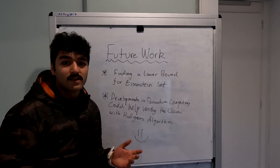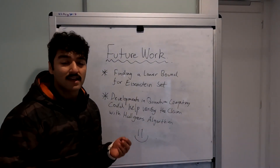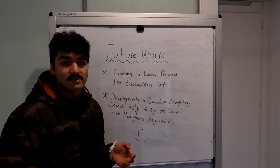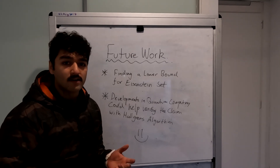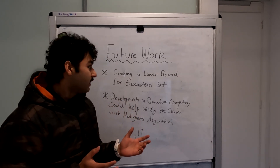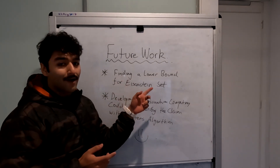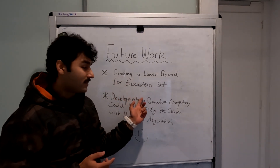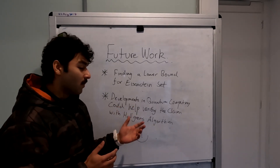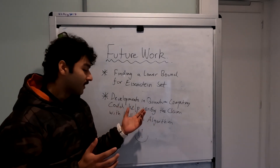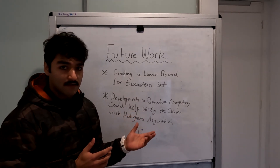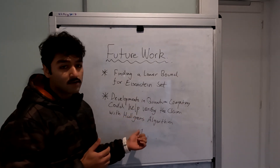And with that we've covered the equivalent conditions to Eisenstein's fourth problem, specifically Eisenstein's Pell equation admitting odd integer solutions. Future work could be done to find a lower bound for the Eisenstein set, and with more development in quantum computing we could further verify the conjecture for the density of the Eisenstein set by using Hallgren's algorithm.